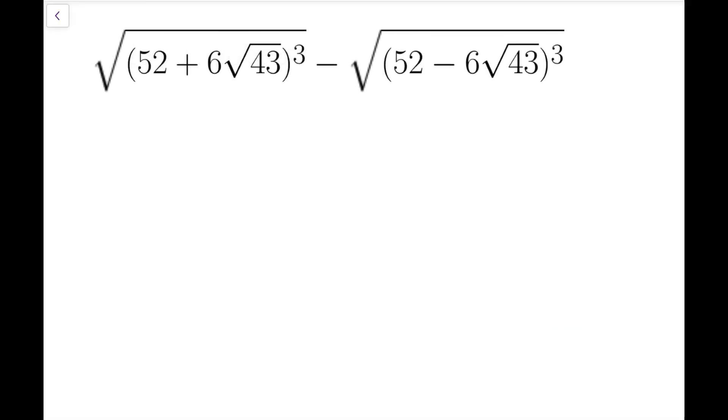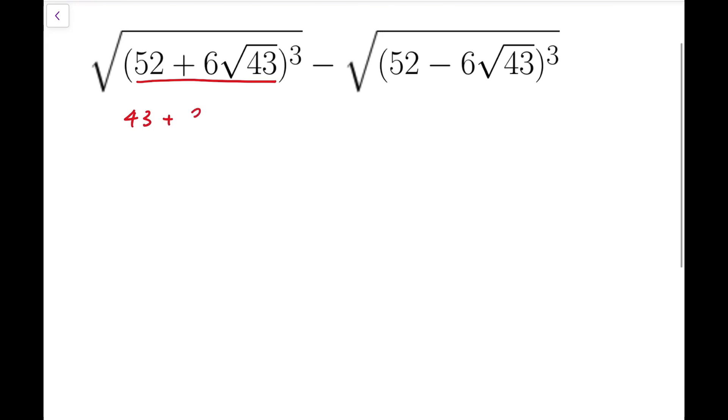The quickest way to evaluate this expression would be to rewrite the expression underlined in red to be 43 plus 9 plus 6 times square root of 43. If I rearrange that, it will become 43 added by 2 times 3 times root 43 plus 3 squared. And of course, 43 can be written as root 43 all squared. Now, this is actually 3 plus root 43 all squared.